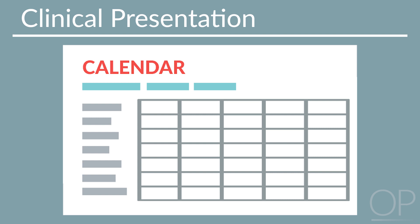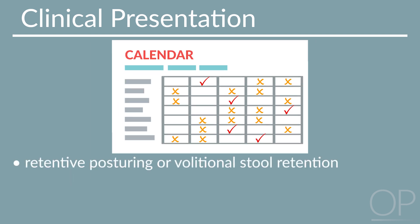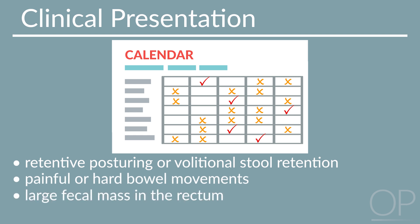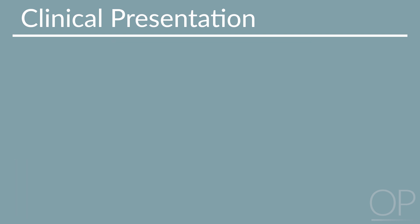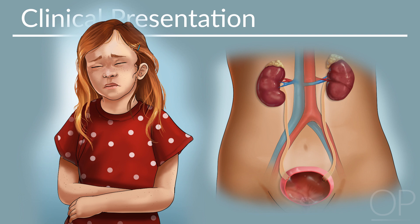A child must present with at least one month of difficulty in defecation showing at least two signs, including: two or fewer defecations per week for a toilet-trained child, one or more episodes of fecal incontinence per week, retentive posturing or volitional stool retention, painful or hard bowel movements, large fecal mass in the rectum, or large diameter stools. The child may also have abdominal pain or symptoms of urinary tract infection.